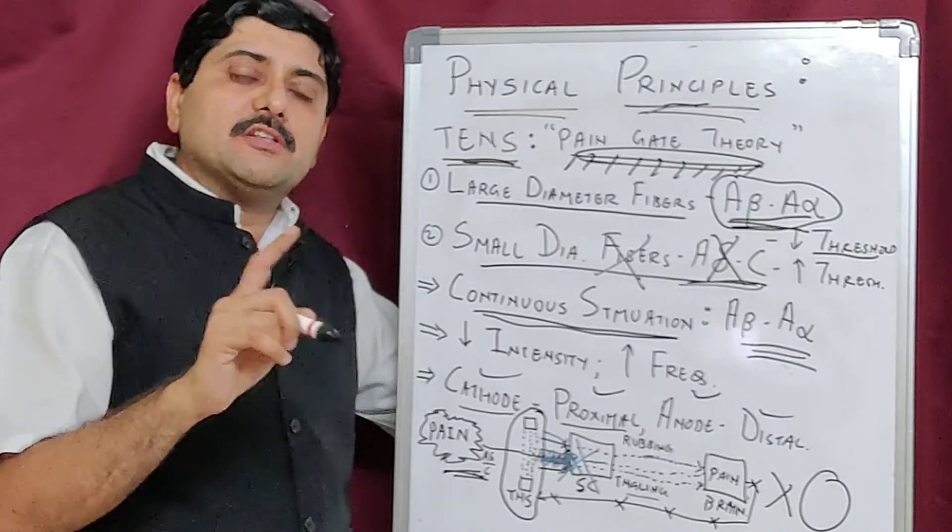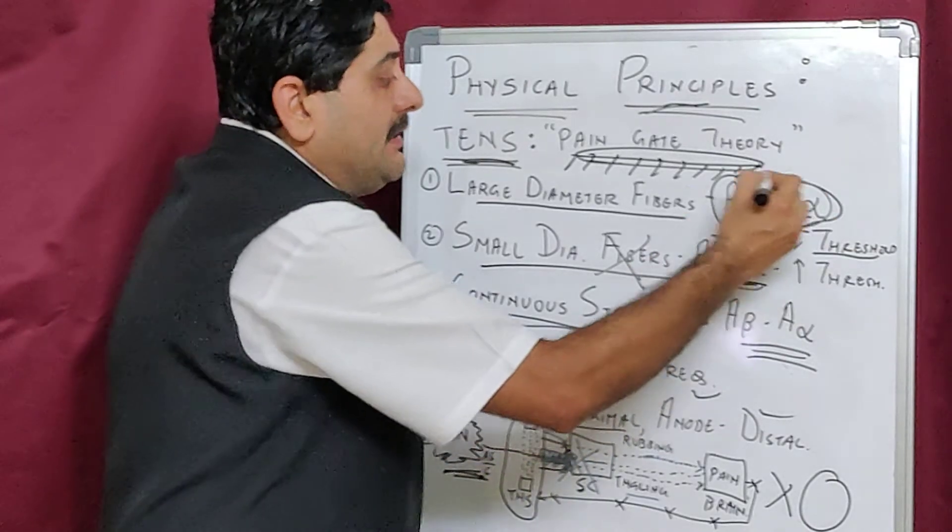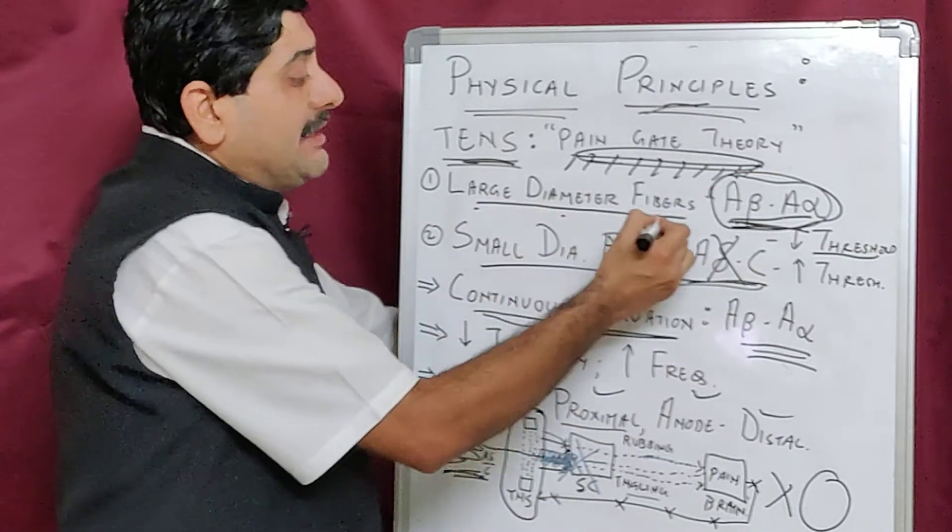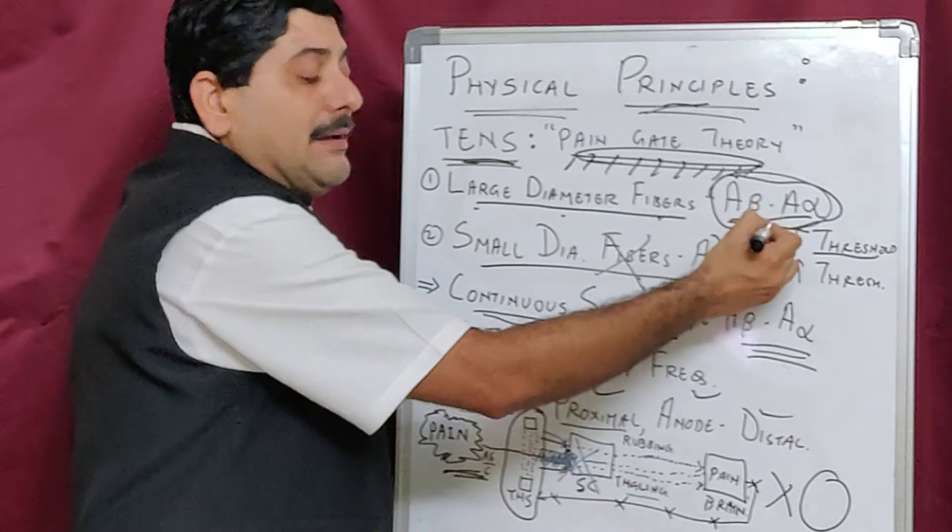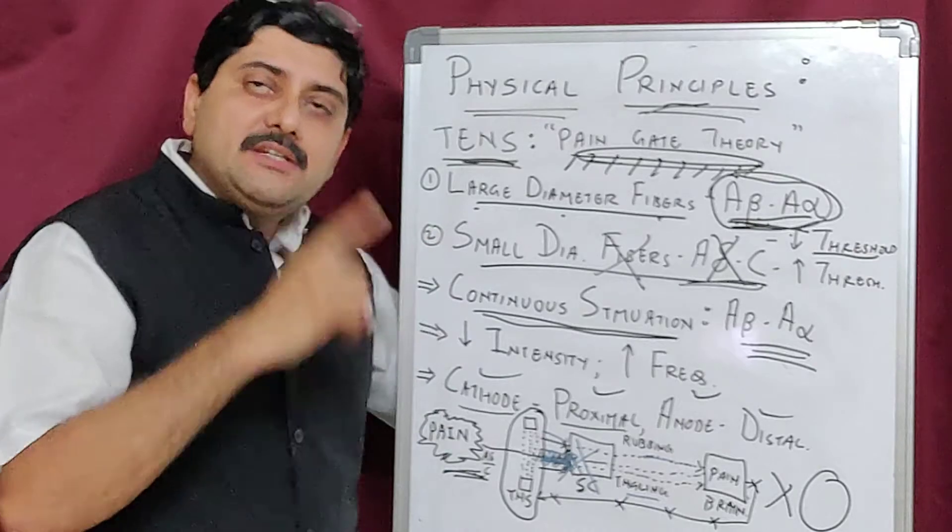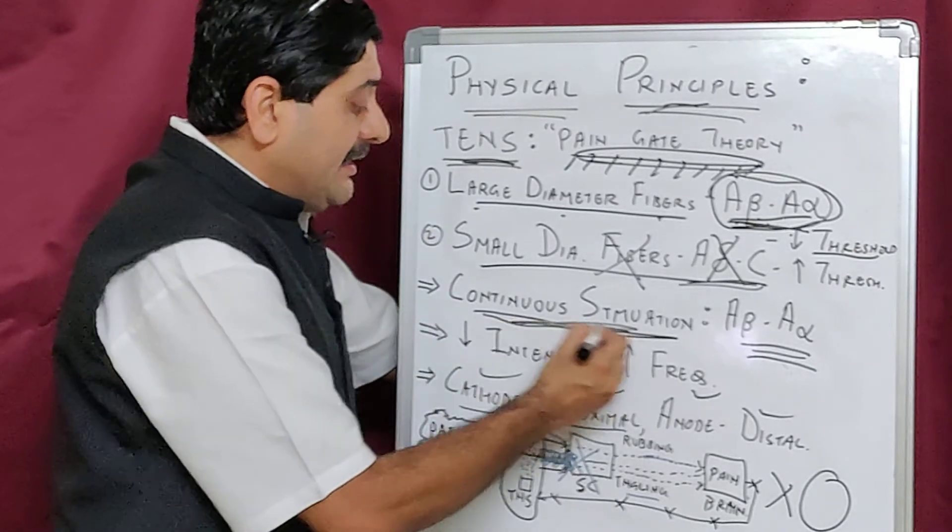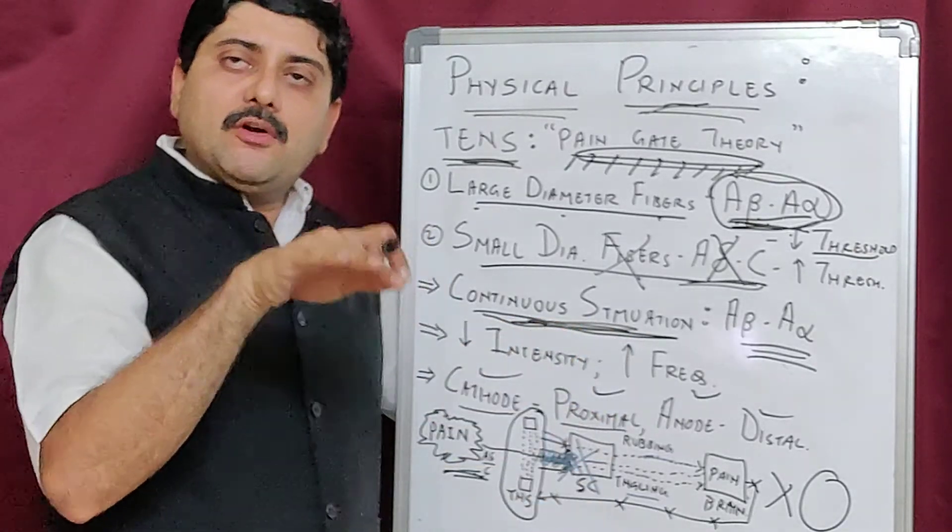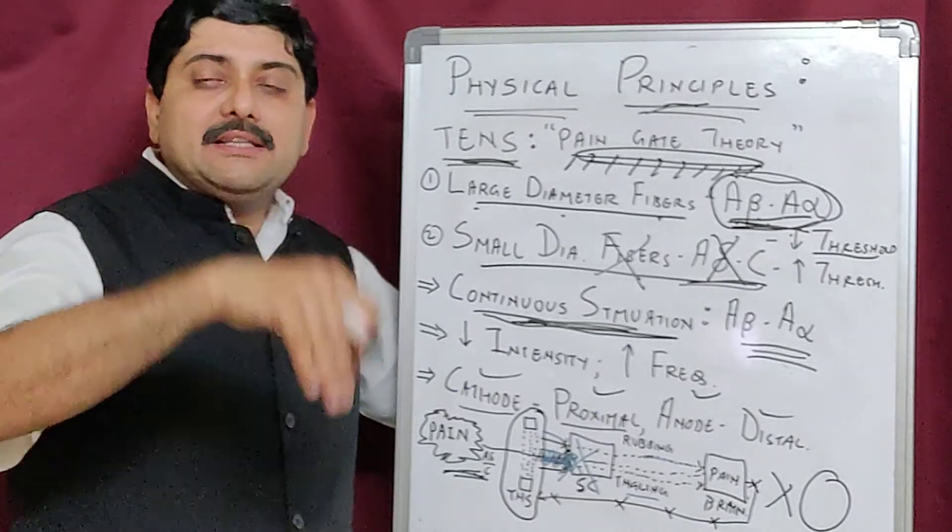We are closing the door of the spinal cord by stimulating the large diameter fibers, A-beta and A-alpha, which are low threshold fibers. When we stimulate them continuously, the sensation from this goes and blocks the sensation of A-delta and C fiber in the spinal cord.